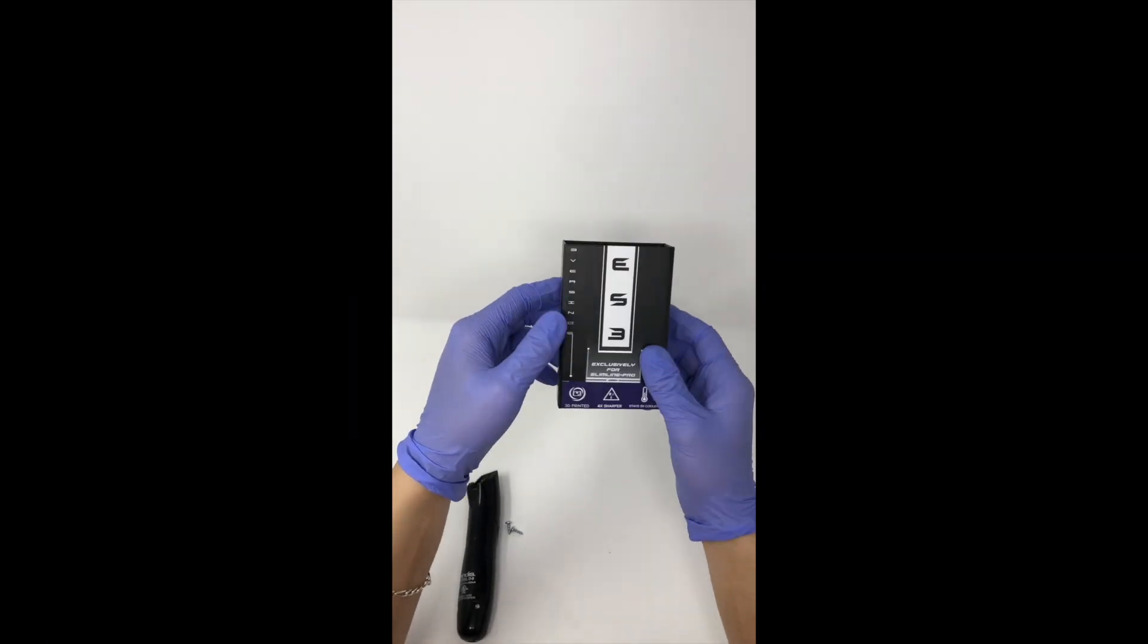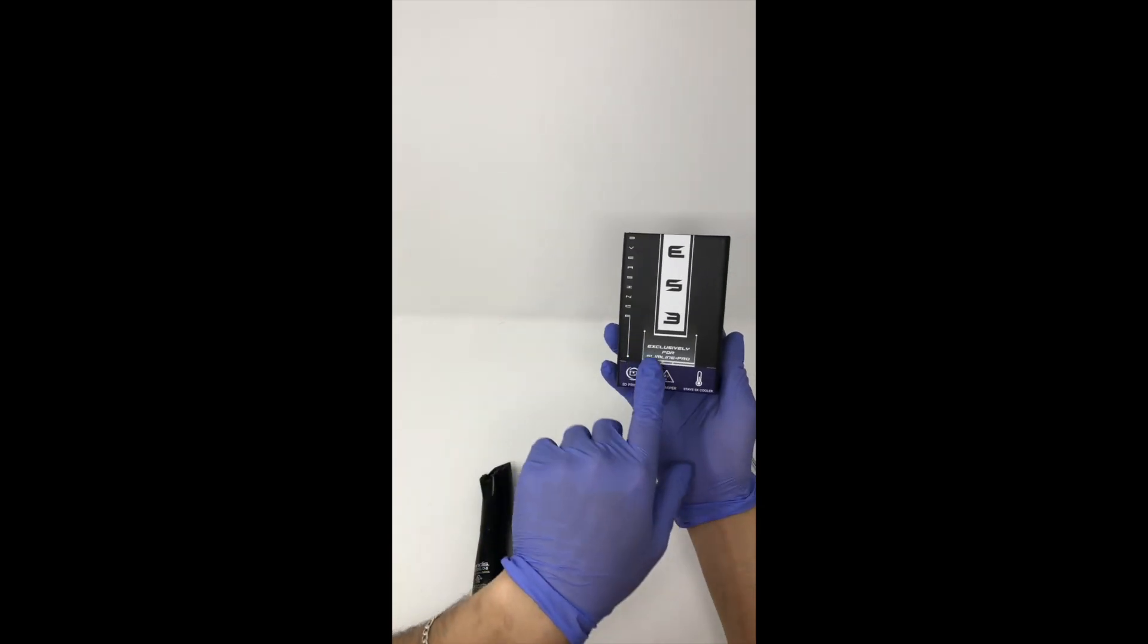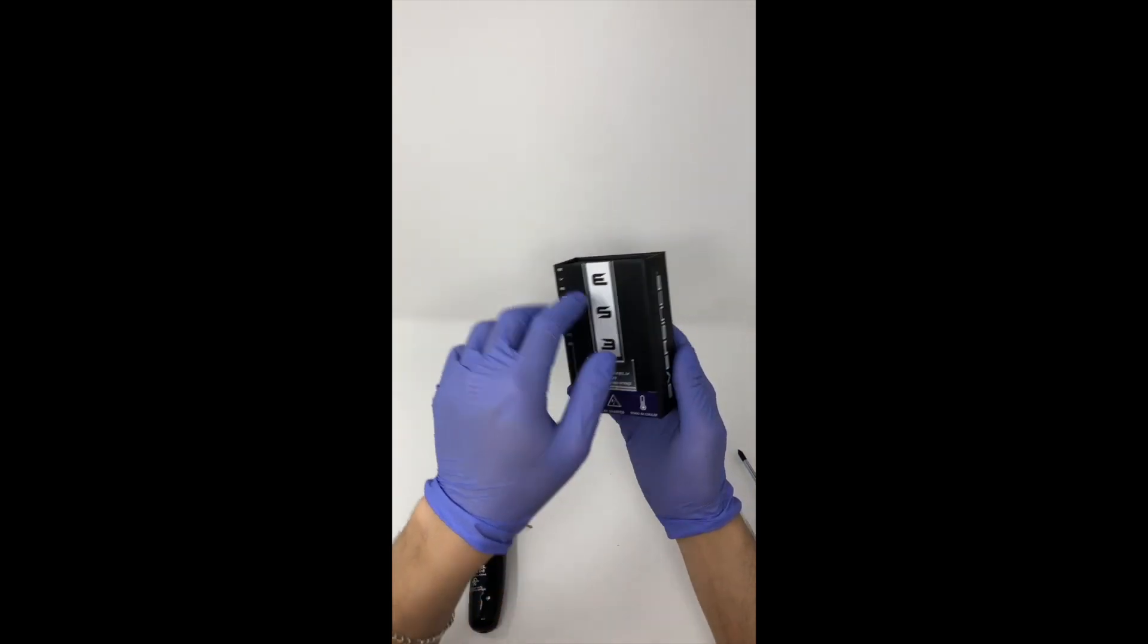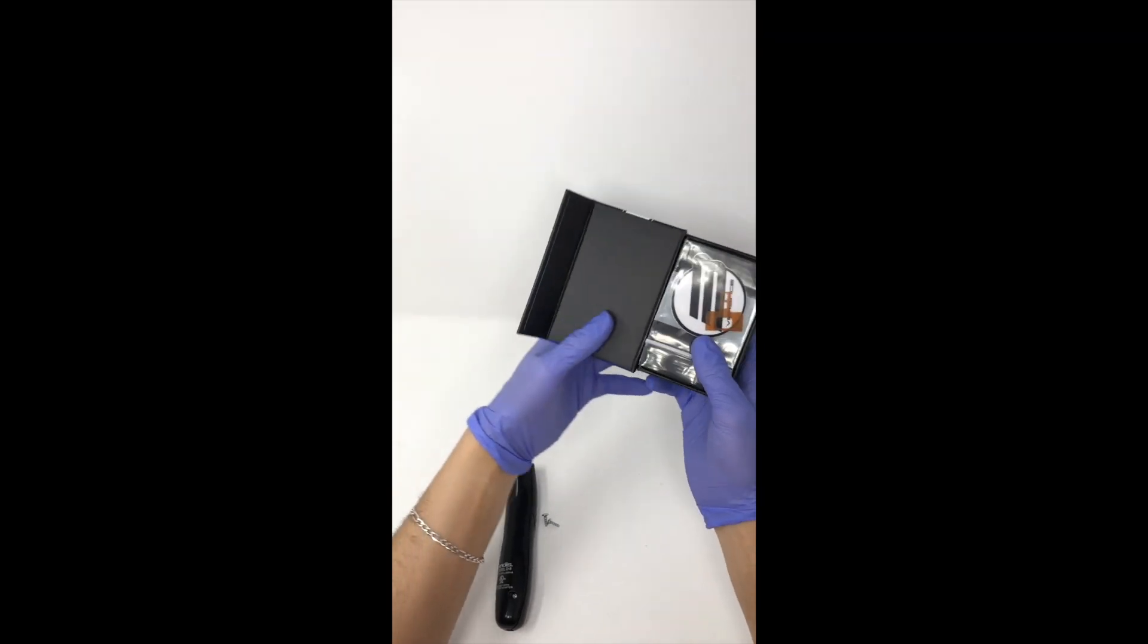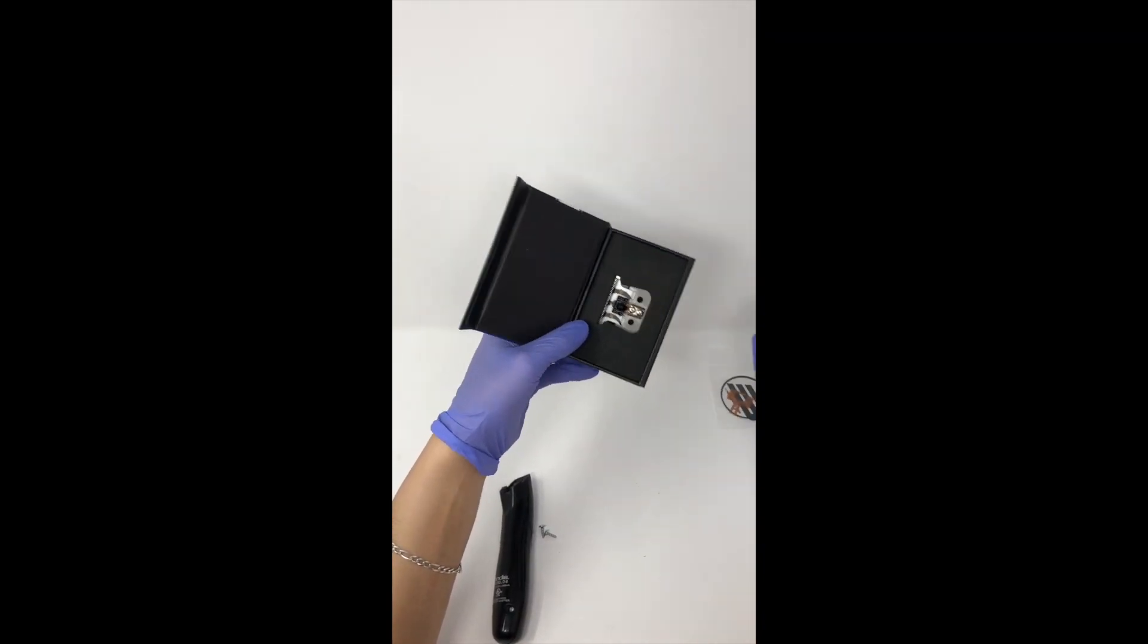What's up guys, I just wanted to make this quick video to show you how to properly install the slimline modded ES3 blade. Just open this up, remove the extra guide plate, and put that on the side.